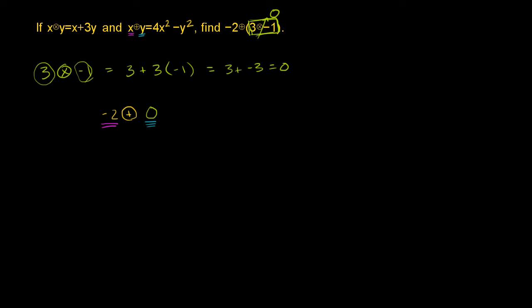So this equals 4 times x squared, which is 4 times negative 2 squared, minus y squared.